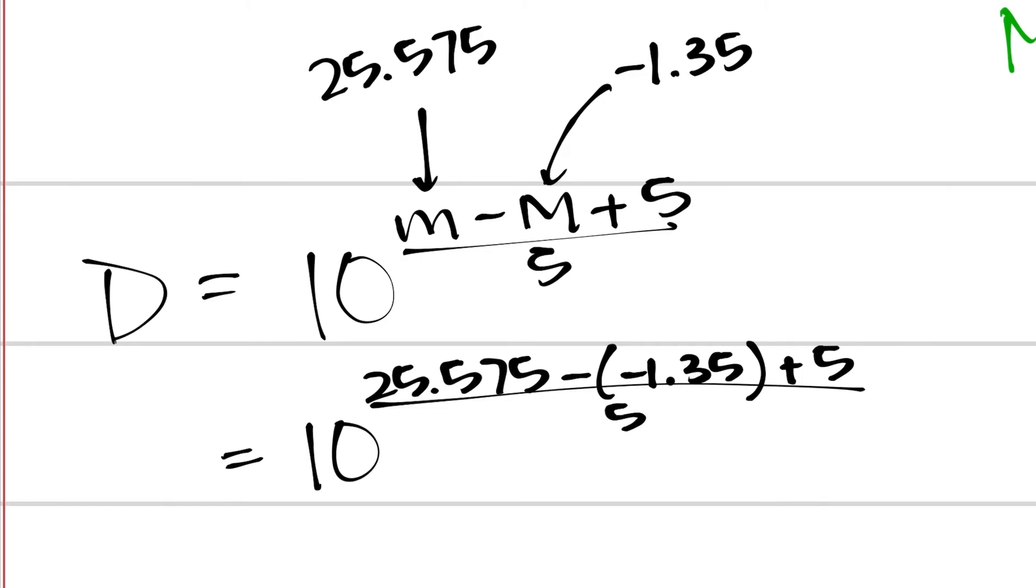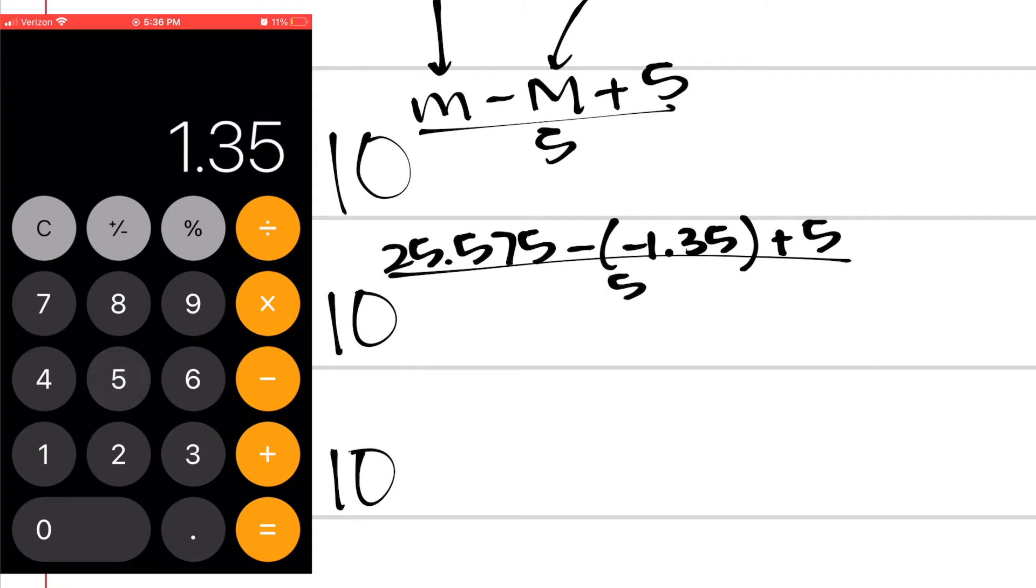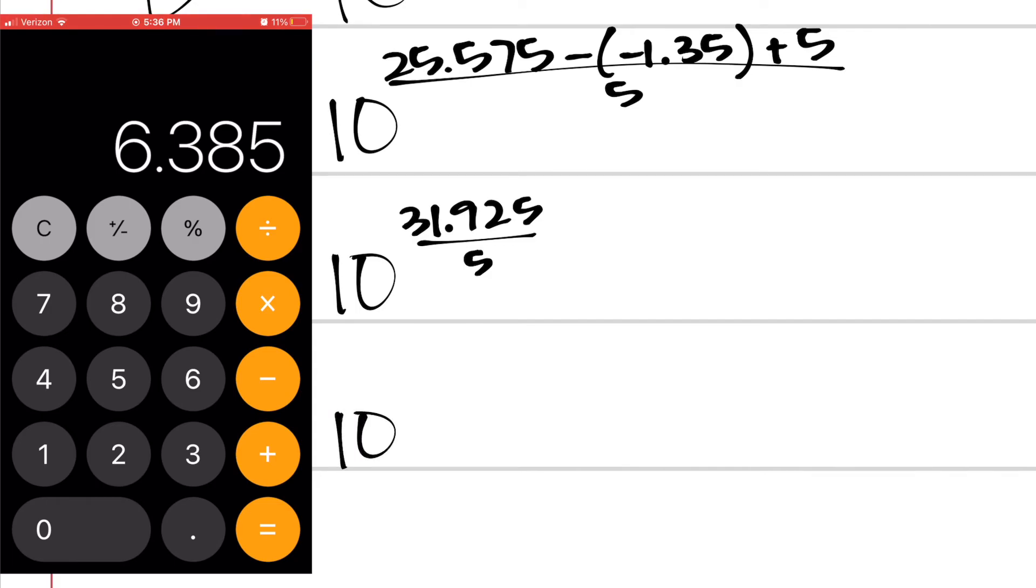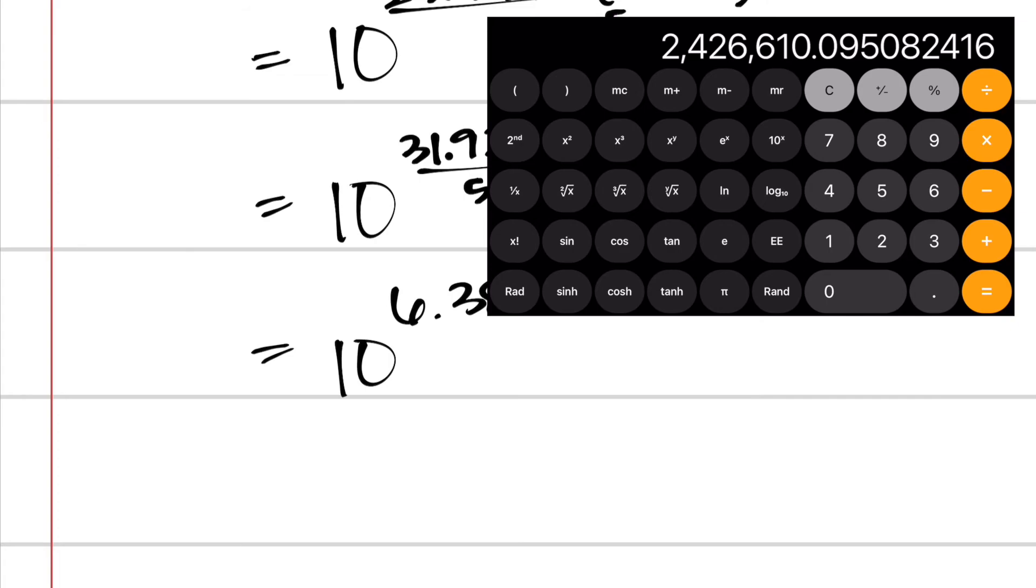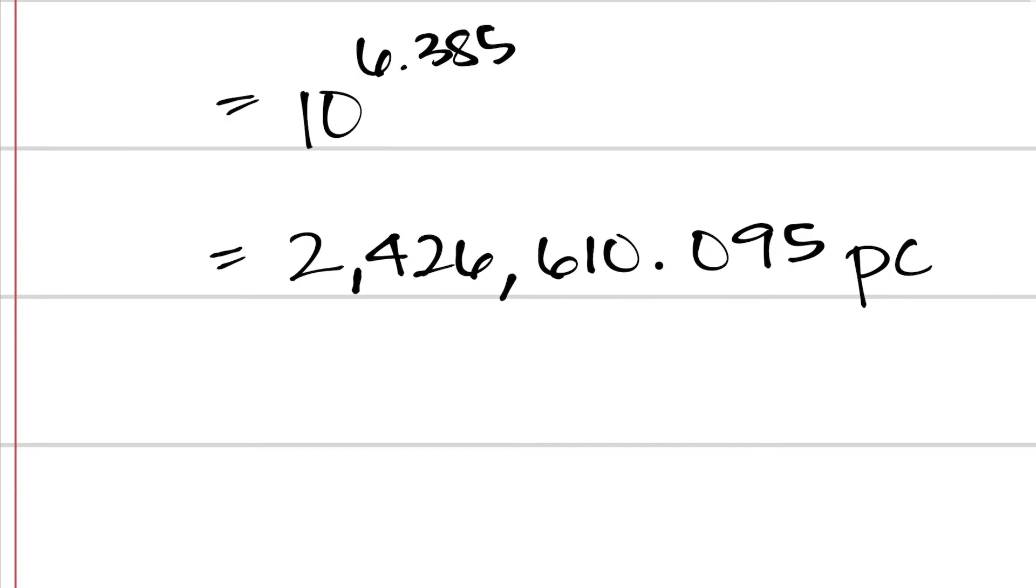So I can jump over to my calculator and plug in these numbers. And when I do that, my numerator becomes 25.575 plus 1.35 plus 5, which is 31.925. So I divide that by 5 and we get 6.385. So now 10 to the power of 6.385 gives me 2,426,610.095. And the unit that I'm going to get for the distance in this case is parsecs. Because anytime I use the distance modulus, my distance comes out in parsecs.